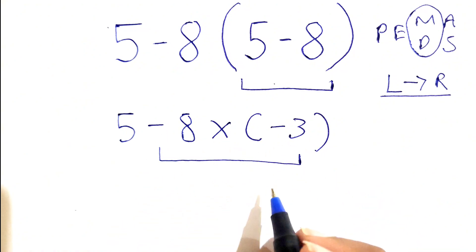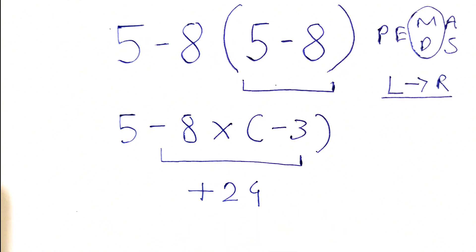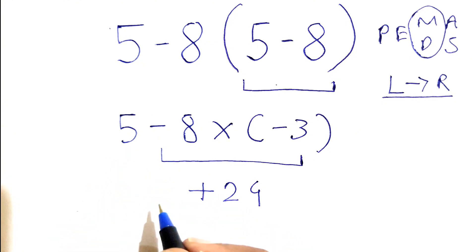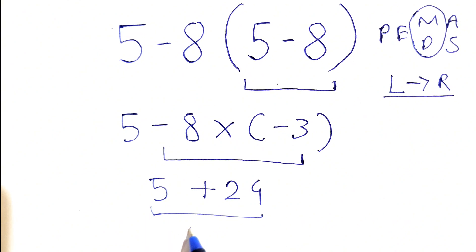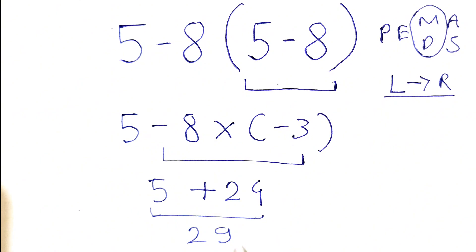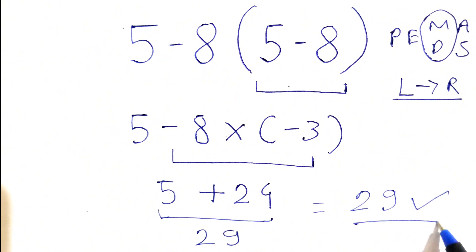Then we are only left with this 5, so we have 5 plus 24, which gives us 29. This is the final correct answer for this expression.